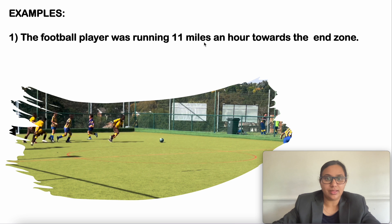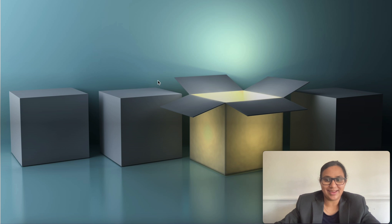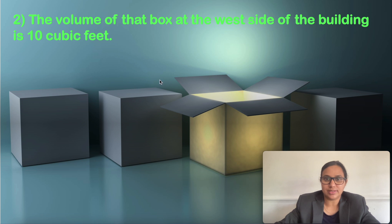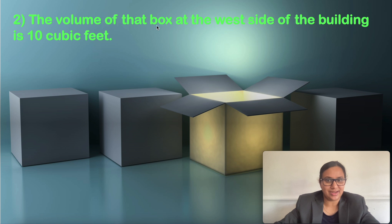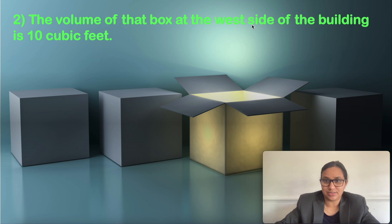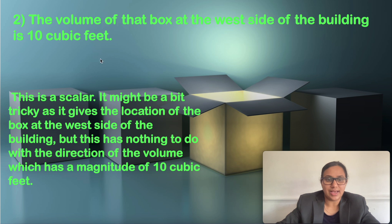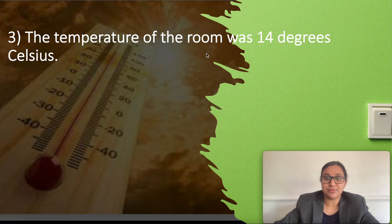Another example: 'The volume of the box at the west side of the building is 10 cubic feet.' Is it scalar or vector? This question is a little bit tricky. Although 'west side' mentions a direction, volume is definitely a scalar — it has nothing to do with direction. The answer is scalar. Next: 'The temperature of the room was 14 degrees Celsius.' Temperature has no direction, so it is a scalar.